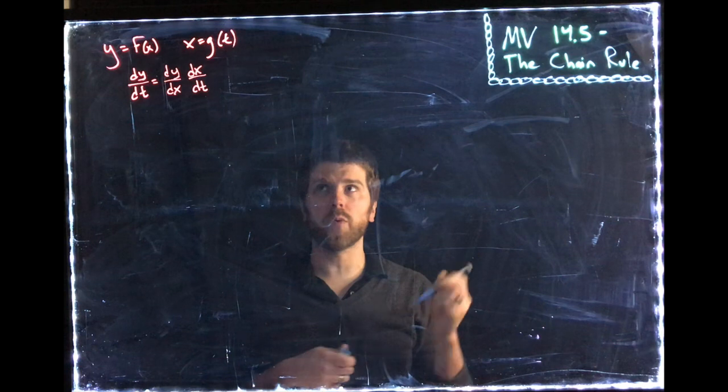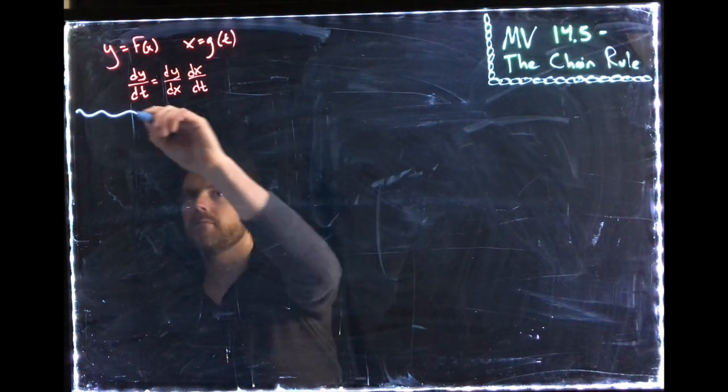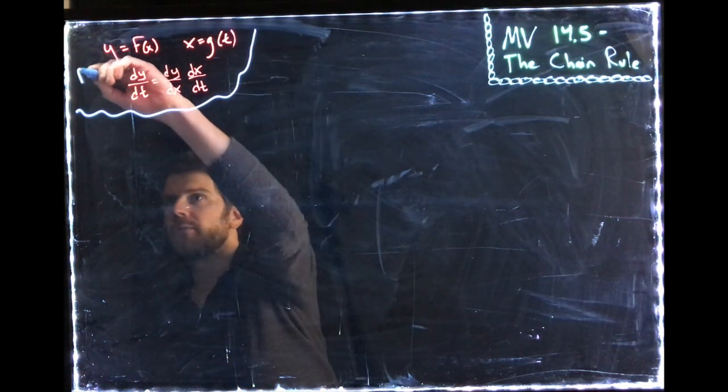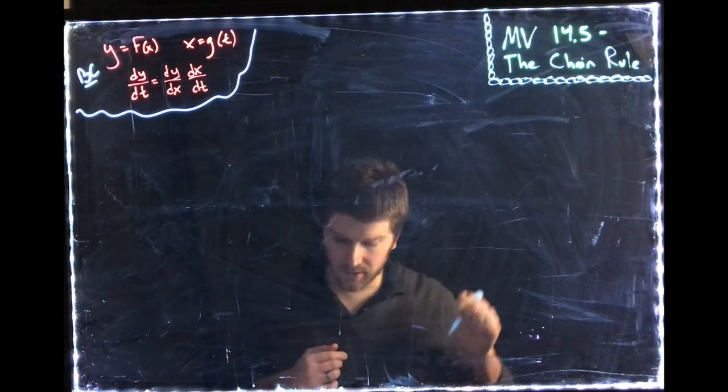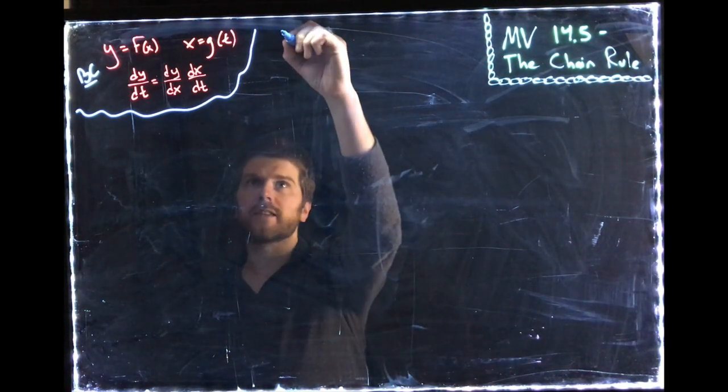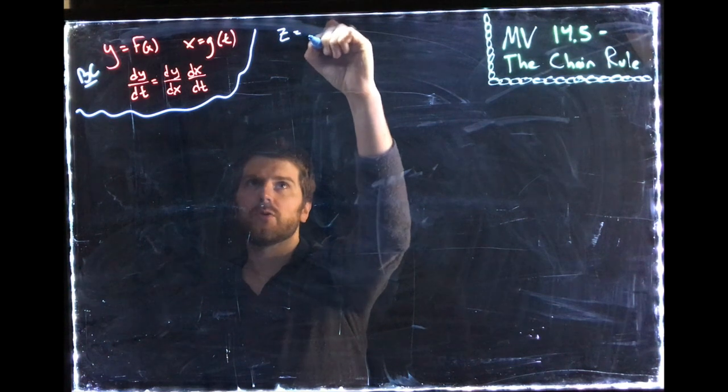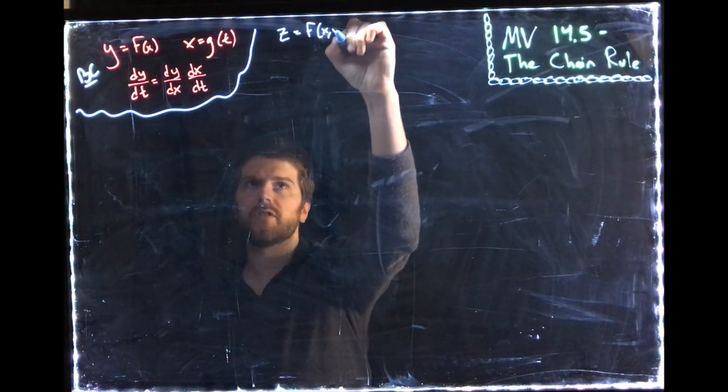So let's look at what we mean now. So this was in olden times, in BC times. Let's look at what we mean now. Let's say, for example, we have some function z equals f of x, y. So z depends on x and y.